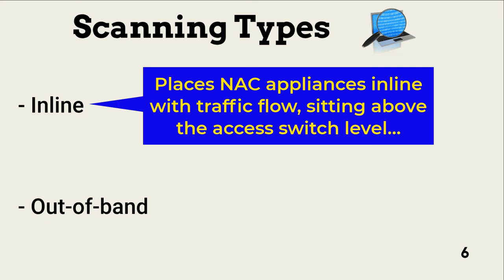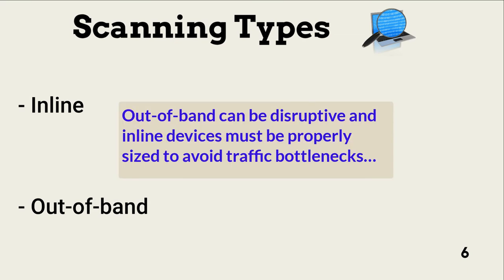In-line devices force all traffic to flow through them instead of simply augmenting existing infrastructure. They usually sit above the access switch level. According to the CISSP-CBK, some contend that out-of-band approaches can be disruptive. On the other hand, in-line devices must be matched to anticipated business bandwidth, or they can slow business operation.